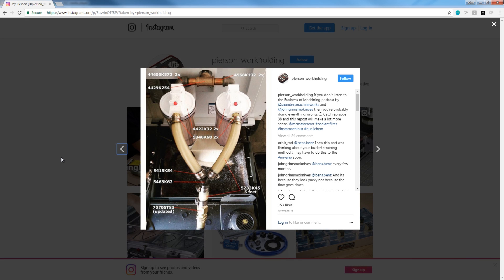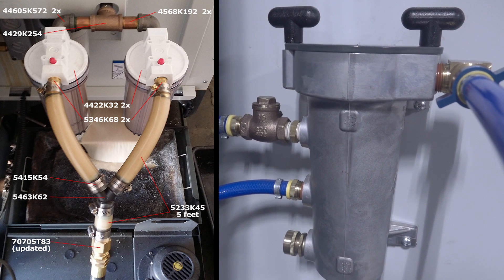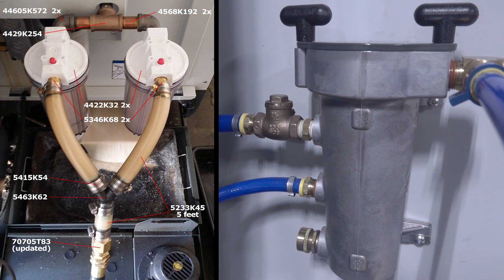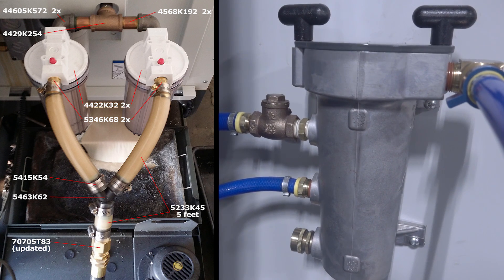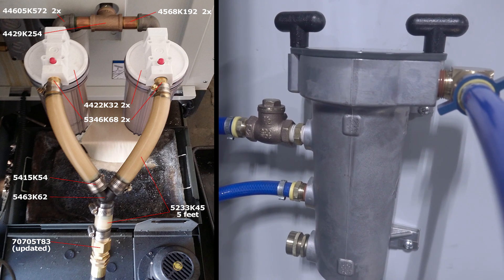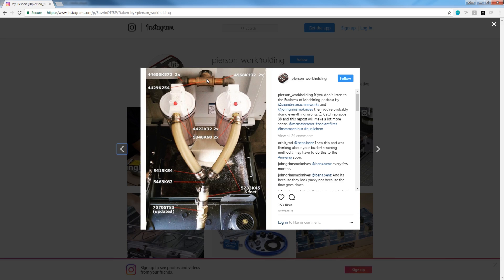We got this idea from Jay Pearson at Pearson Work Holding. The problem is that his machine, I think is an older machine and perhaps a tool room mill, it doesn't have the gray canister filter that we and most late-model Haas machines have. And I want to keep that canister filter. It's a rougher pre-filter to help get the worst of the material out before we run it through these 20-micron filters.